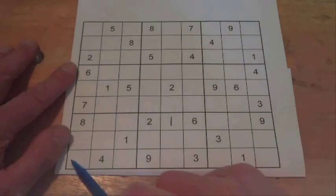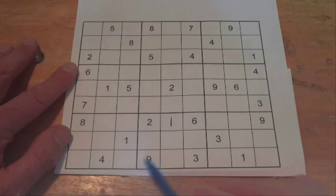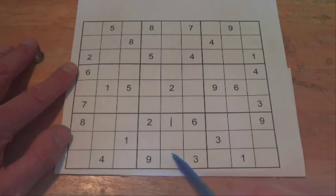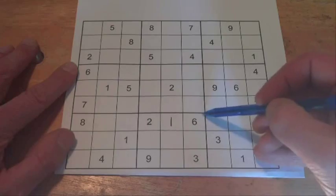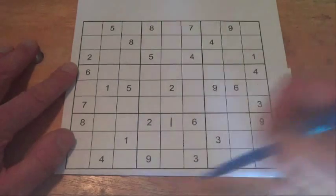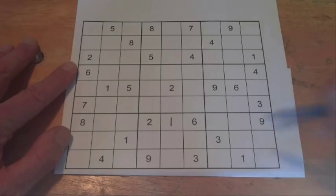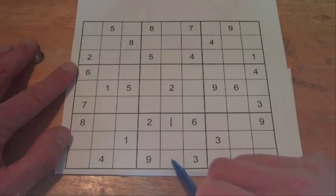In this case, we've got a 4 along that bottom line. So that stops a 4 being put anywhere else along that bottom line. And if we think about this box there, then 4 can only feature in that box once. And we know the 4 is not going to be there.